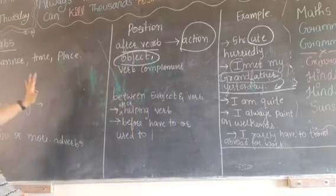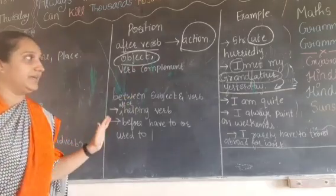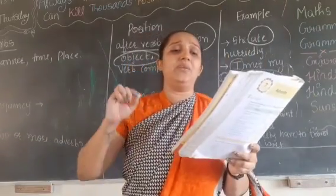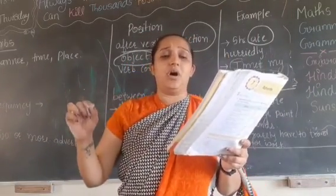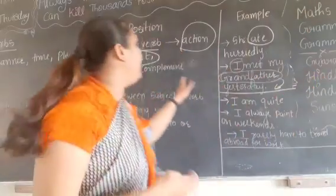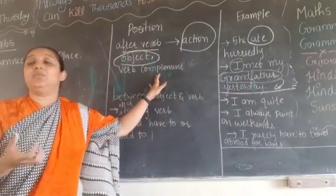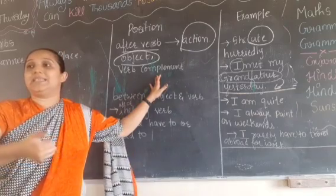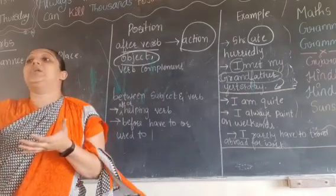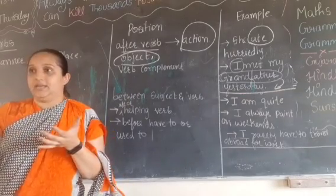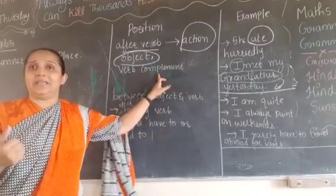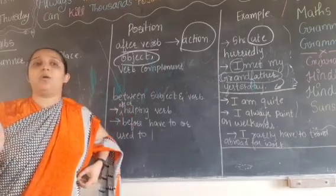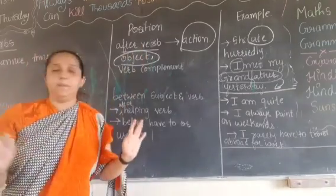It can also come after a verb complement. For example: 'We plan to finish the work quickly.' Here 'quickly' comes after the verb complement. Verb complement placement will not come up as often, but after verb and after object are the most important positions.